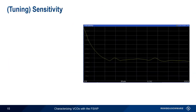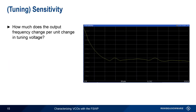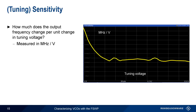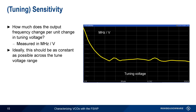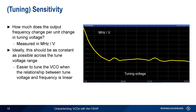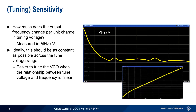Sensitivity, or Tuning Sensitivity, answers the question: how much does the output frequency change per tuning volt? In other words, does each additional tuning volt change the output frequency by the same amount, and if not, how much variation is there? The units of this measurement are megahertz per volt, and ideally we would want this change to be constant across the entire tuned voltage range. One reason for this is that it's much easier to tune our VCO when we have a linear tuning sensitivity. Going back to our plot of frequency versus tuned voltage, we see a slightly nonlinear area at the very low end of the voltage range, and this corresponds to the nonlinear region on our tuning sensitivity graph.